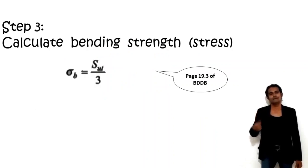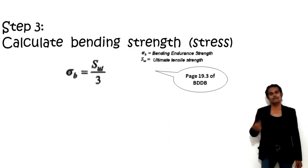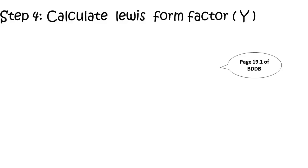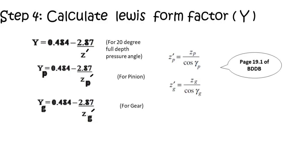Step 3: Calculate bending strength as SUT/3. The formula is on page 19.3 of the Bhandari design data book. Step 4: Calculate the Lewis form factor based on Z-dash (virtual number of teeth) for 20-degree pressure angle. Use Y-dash-P = 0.484 − 2.87/Z-dash-P and Y-dash-G = 0.484 − 2.87/Z-dash-G.